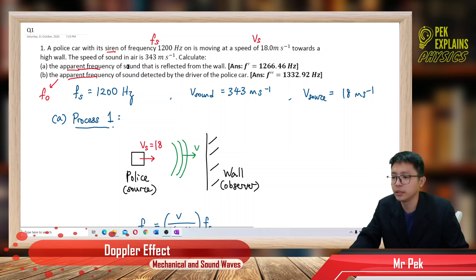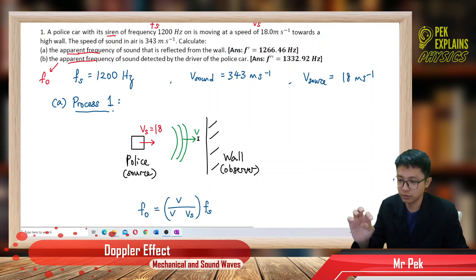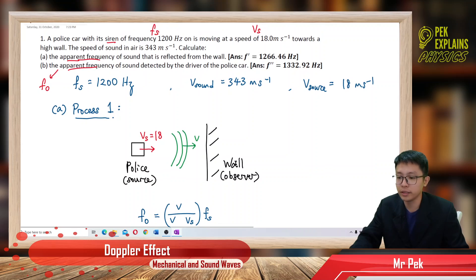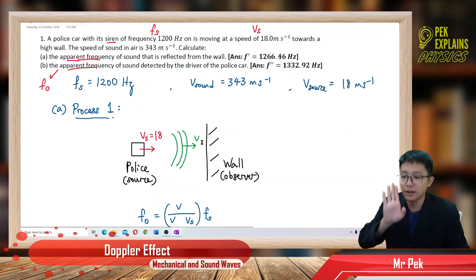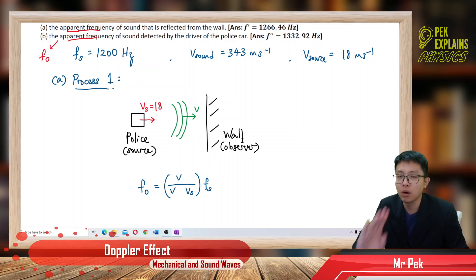For part A, the police car acts as the source emitting sound towards the wall, so the wall is the observer receiving the sound from the police car siren. The wall is waiting to reflect the incoming wave. So in this case, the police car is the source and the wall is the observer.